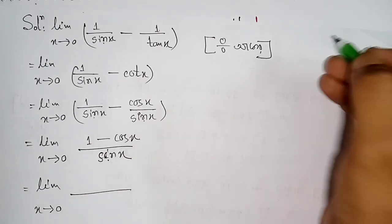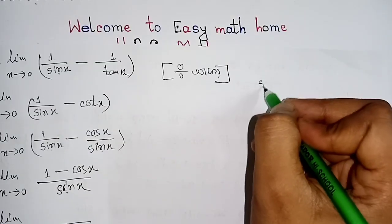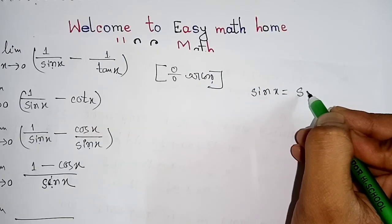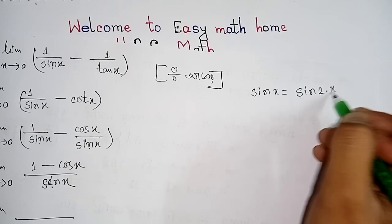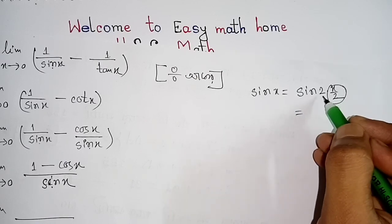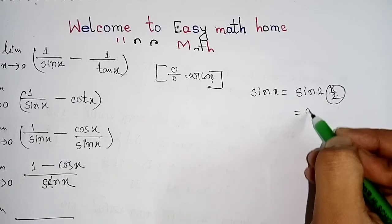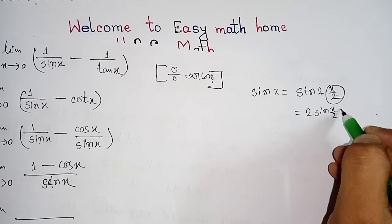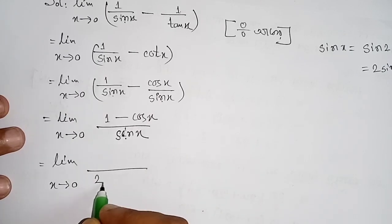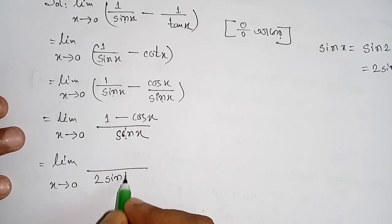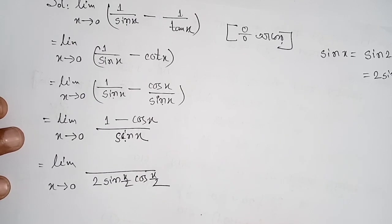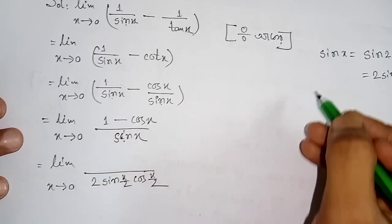Now we apply the identity sin(2a) = 2·sin(a)·cos(a), so sinx = 2·sin(x/2)·cos(x/2). Also, 1 minus cosx can be rewritten using a double-angle identity.